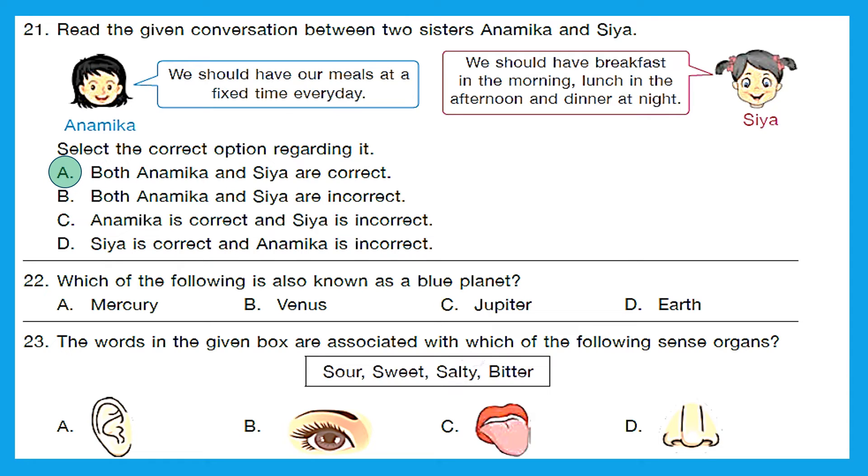Question 22. Which of the following is also known as blue planet? This is very easy. Earth is known as blue planet because of the water content earth has. Option D is the right answer. Question 23. The words in the given box are associated with which of the following sense organs? Sour, sweet, salty, bitter. And what are these? These are the tastes of a particular thing. And how do we taste? We taste through our tongue. So option C is the right answer.